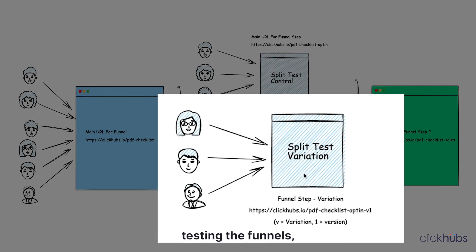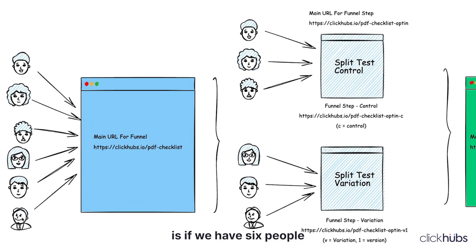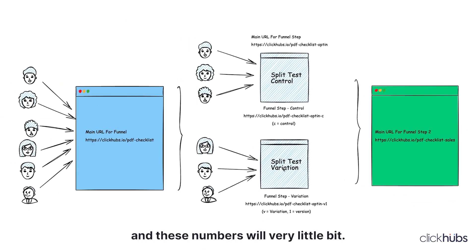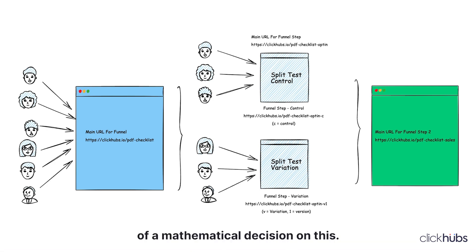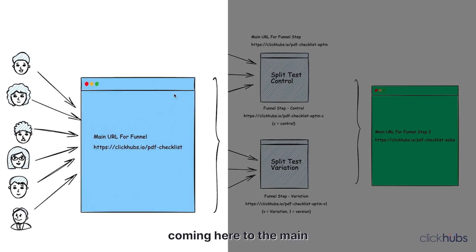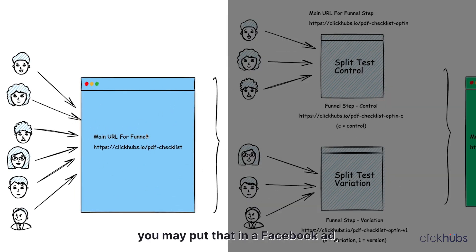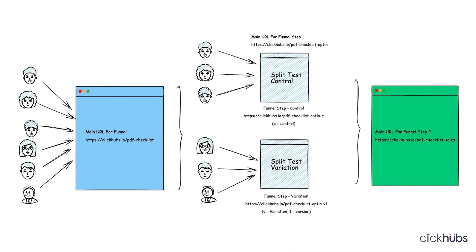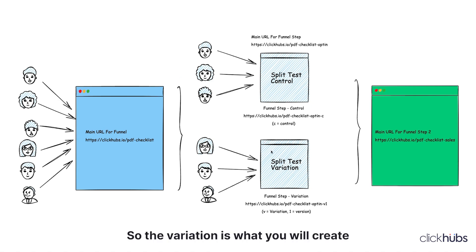We also have the option of split testing funnels, so we can create a second one called a variation. If we have six people coming through, it's going to send three people to one version and three to another. These numbers will vary a little bit — typically when split testing, you want large quantities of people before you can make any mathematical decision. But to simplify: when six people come to the main URL you shared — whether in a Facebook ad, emails, or social media posts — ClickHubs is going to make the decision to send half to the control and half to the variation. The variation is what you create to test a headline or something like that.